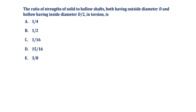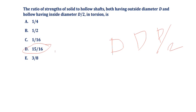The ratio of strength of solid to hollow shafts, both having outside diameter D, with the hollow shaft having inside diameter D/2, in torsion. The solid shaft diameter is D, the hollow shaft has outer diameter D and inner diameter D/2. The ratio of strength of solid to hollow shafts is 15/16. If it were hollow to solid, the answer would be 16/15.